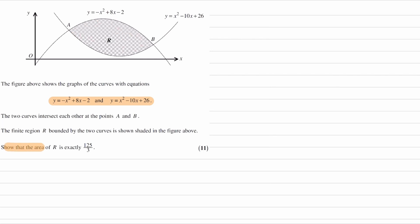Alright, so the first thing that we want to do is work out what A and B are, so we know what limits we would have for our integral. We would just set equal to one another the minus x squared plus 8x minus 2, set this equal to the other quadratic, x squared minus 10x plus 26.